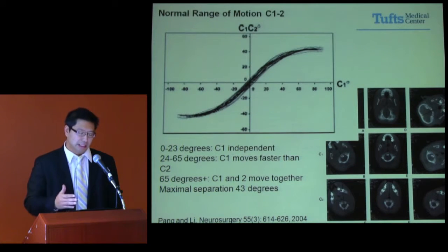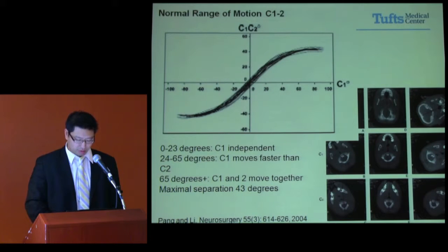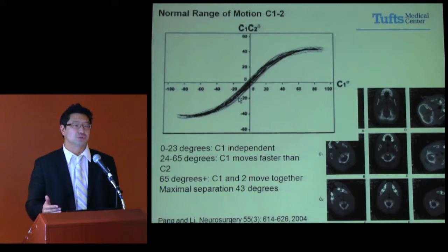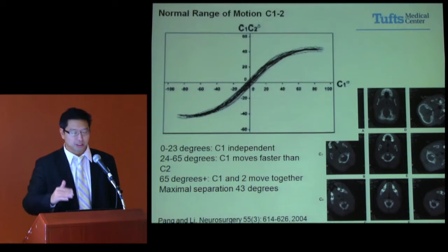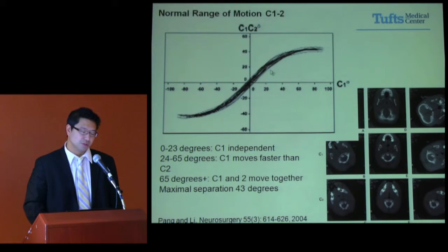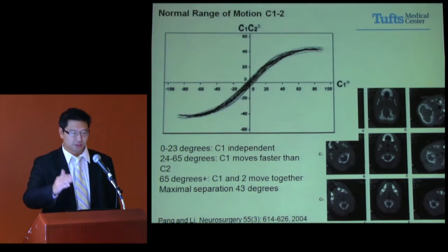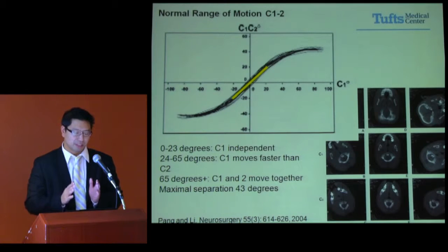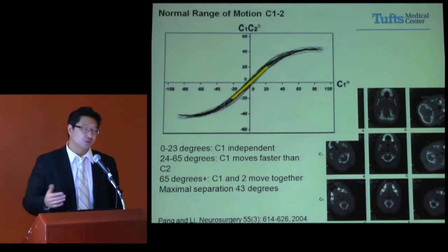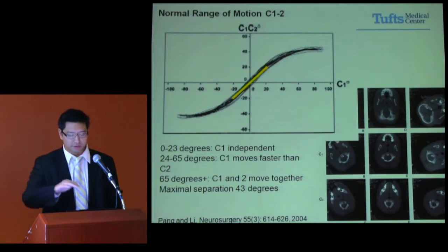In doing so, he helped delineate that, in this chart, the vertical axis is the separation between C1 and C2 — that angulation formed — and the horizontal axis is the angulation of C1 from neutral. From 0 to 23 degrees, you have a fairly straight line, so C1 moves independently of C2 at a 1:1 ratio. Beyond that, 24 to 65 degrees shows a slight curve, where C1 moves a little faster than C2, but they both move in conjunction.